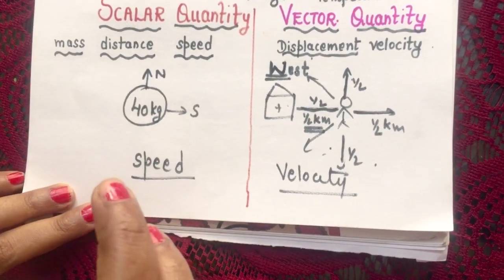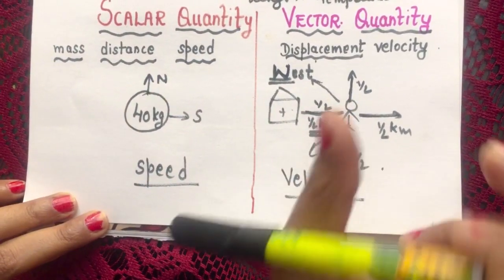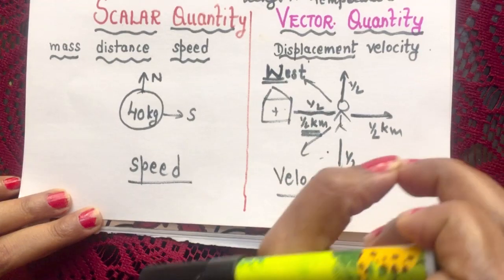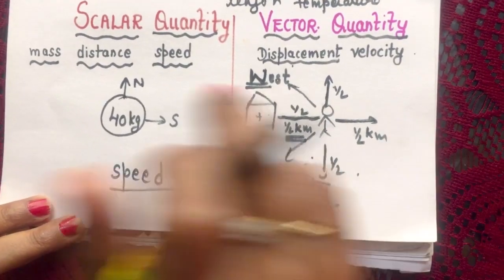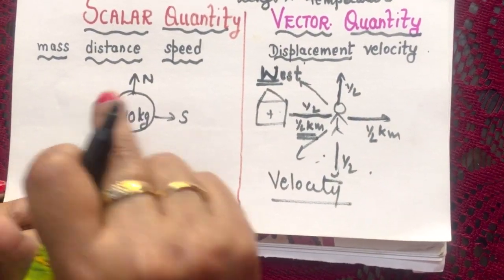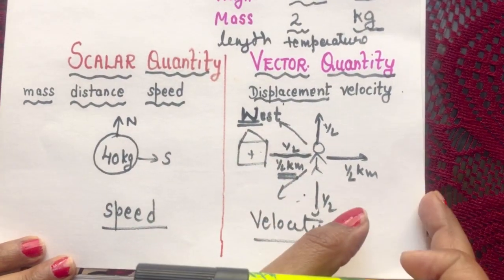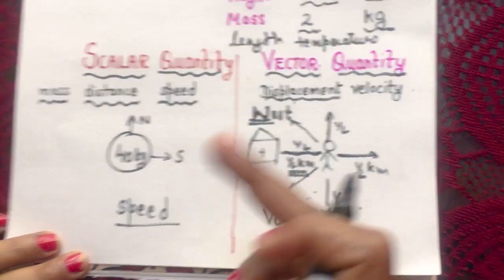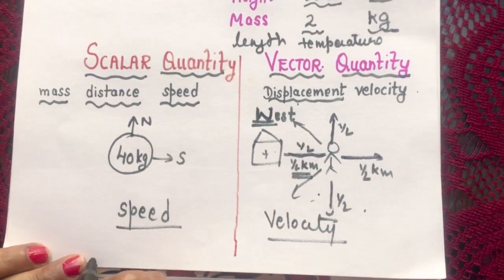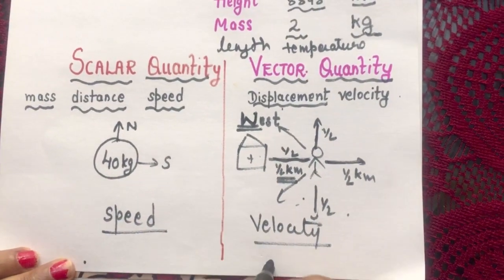Just as length of path is distance, the path length in a particular direction is displacement. So this is how we can differentiate between scalar and vector quantity. The complete description you can find in the description box. Next video you will see the difference between distance and displacement.